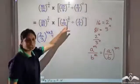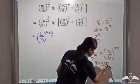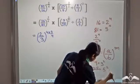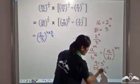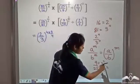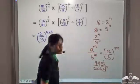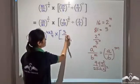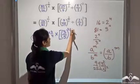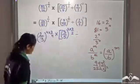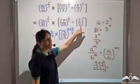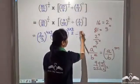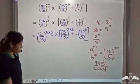For the second term: 9 is equal to 3 squared and 25 is equal to 5 squared. So 9 by 25 is 3 squared by 5 squared, which can be written as 3 by 5 whole squared. So we write this as 3 by 5 whole squared into 3 by 2, divided by 2 by 5 whole cubed. This is what we have.